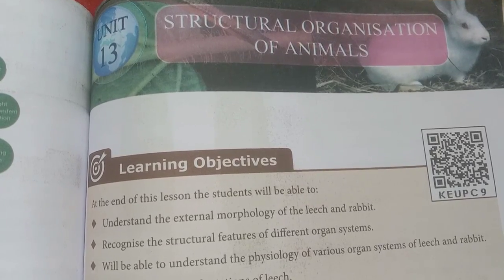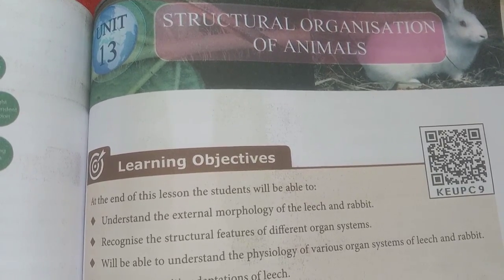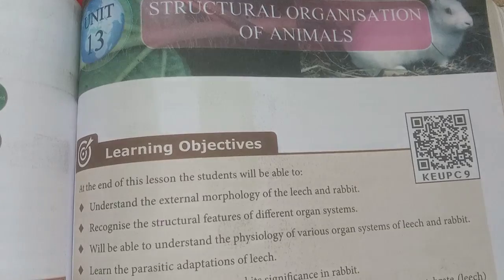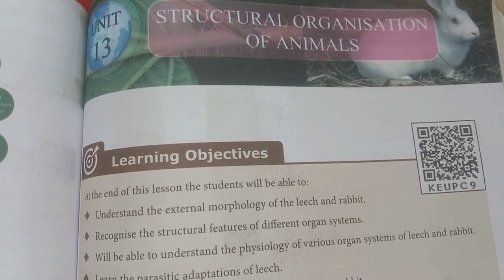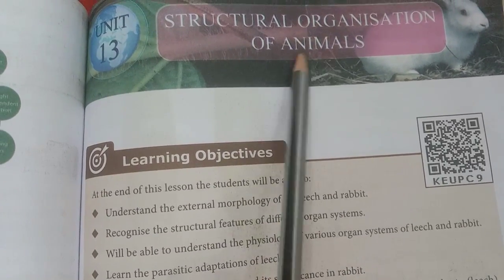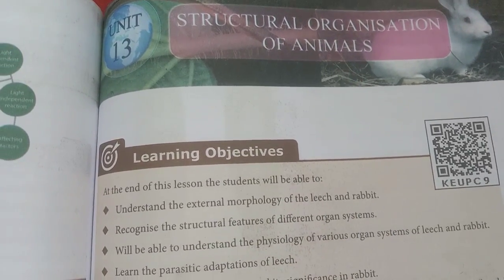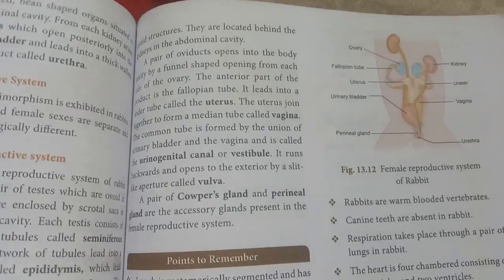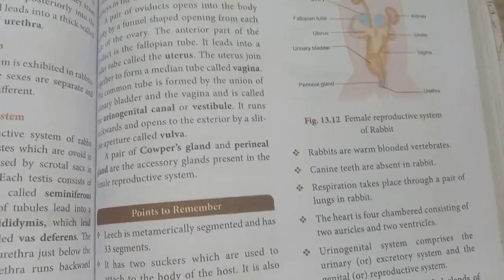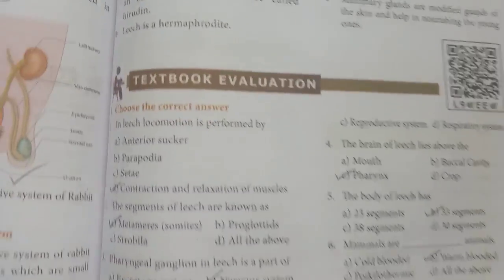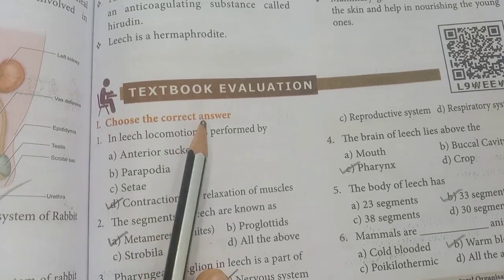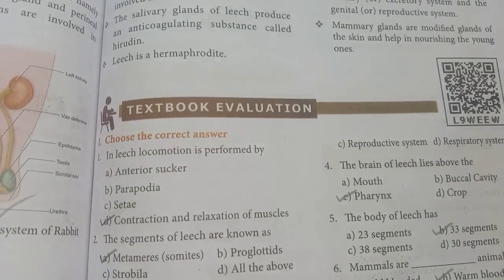Greetings everyone, welcome to our channel Student Station. Please subscribe to our channel. In this video we will look at 10th standard science unit 13, structural organization of animals — the book back exercise portion. Starting from page number 197, Roman number 1: choose the correct answer.